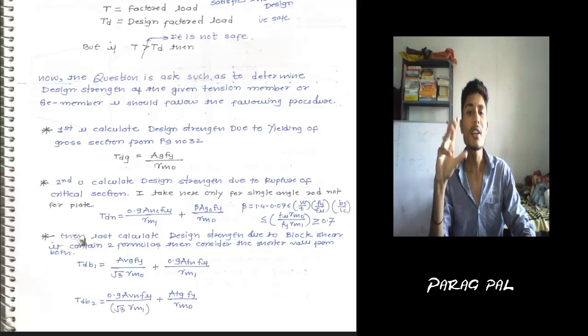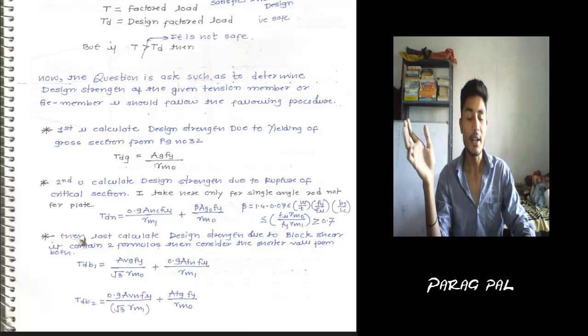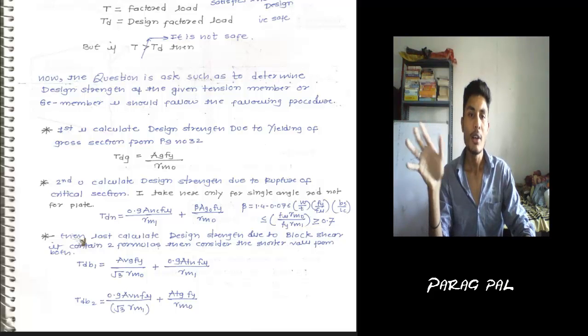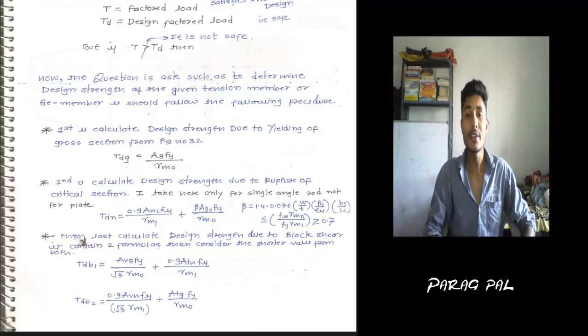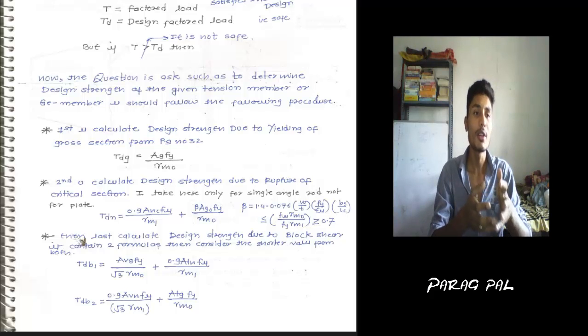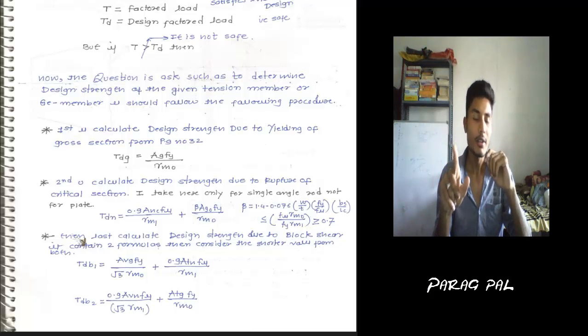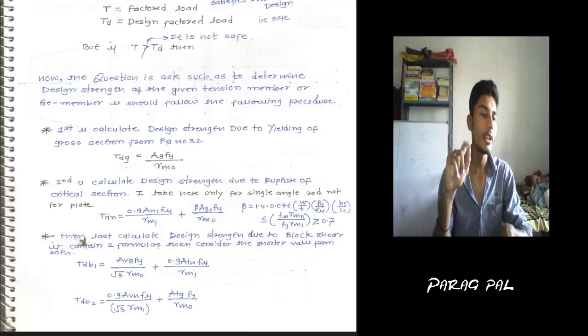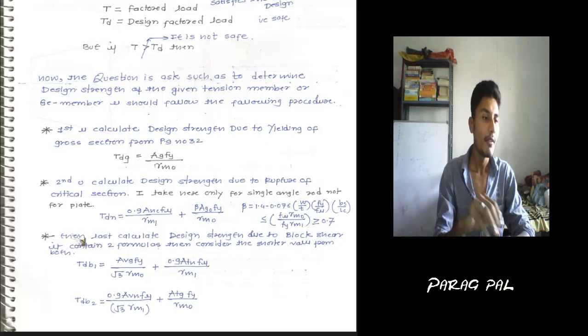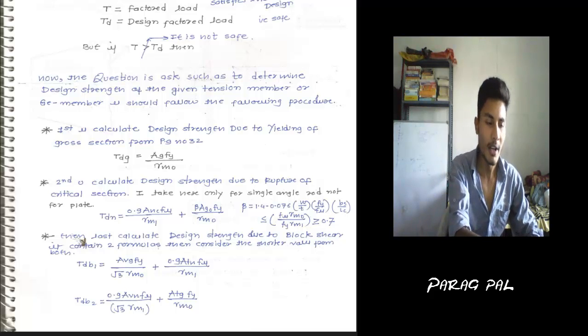For approximate calculation during the design, the TD is not - sometimes the T is not given, factored load is not here. So you have to determine some T. You cannot obtain the T, you don't know about what load is coming out, then how can you design? You cannot use the TDN formula. For that, some value is required. For that, one formula is there which is called TDN. It is also page number 33 clause 6.3.3, but it is an approximate formula which is given by alpha times AN times FU upon gamma M1.